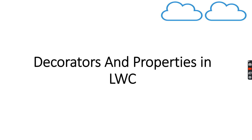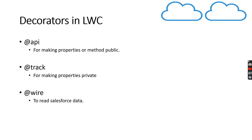Today we are going to discuss about decorators and properties in lightning web components. There are three majorly used decorators in lightning web components: @api, @track, and @wire.